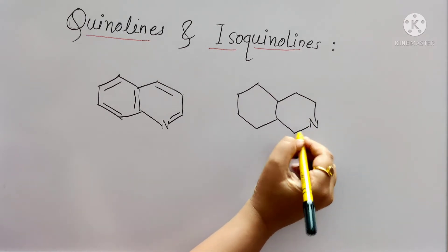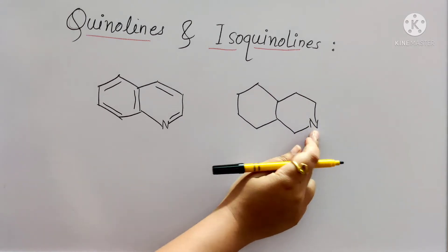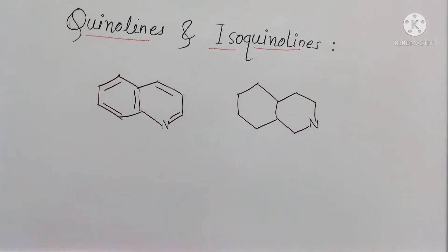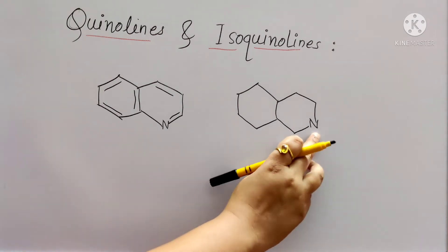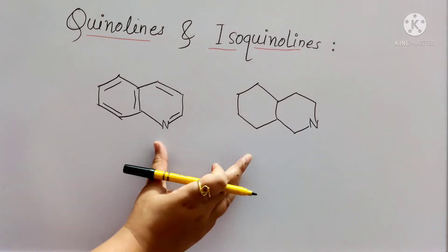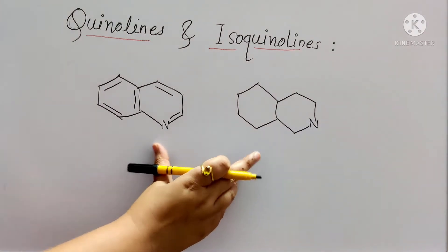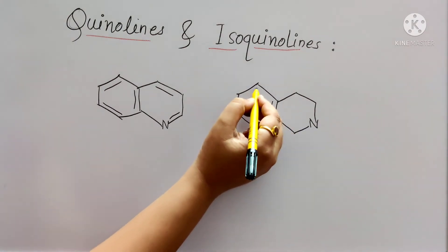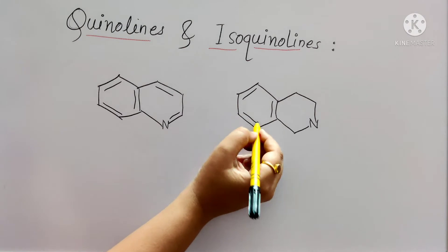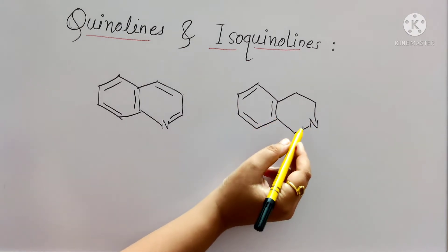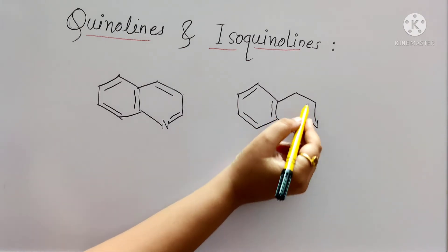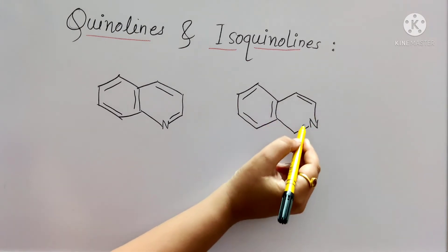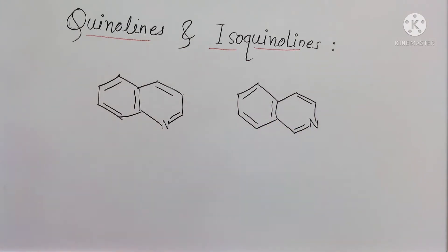Next we will see the structure for simple isoquinoline. Once again, here the heteroatom present is nitrogen. Now, what is the difference between quinoline and isoquinoline? Only the position of the heteroatom is different.